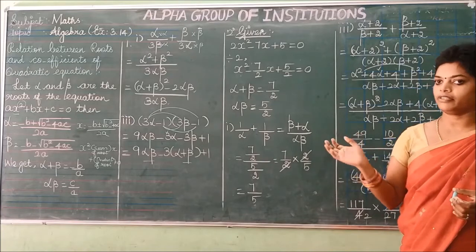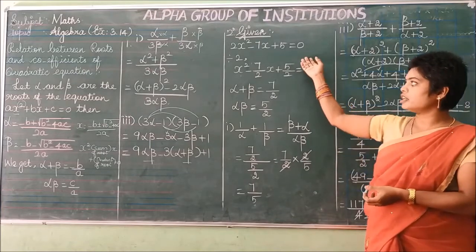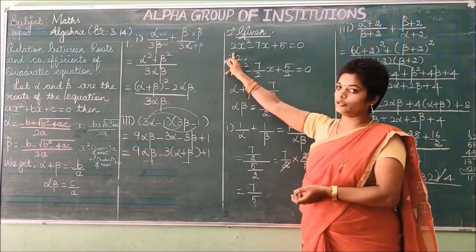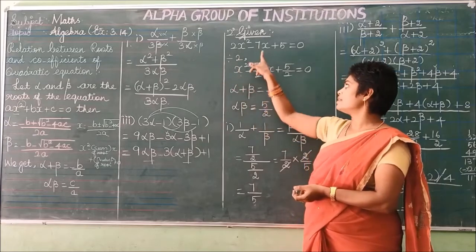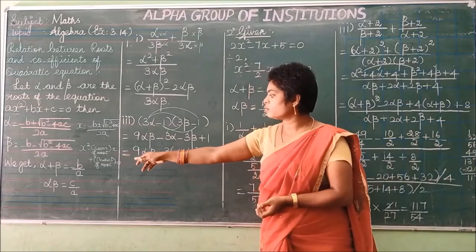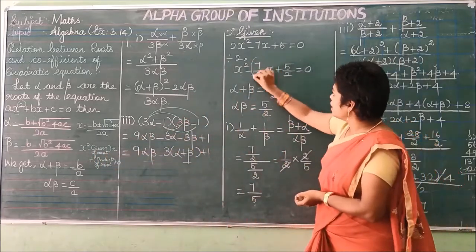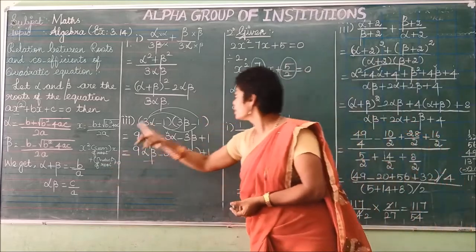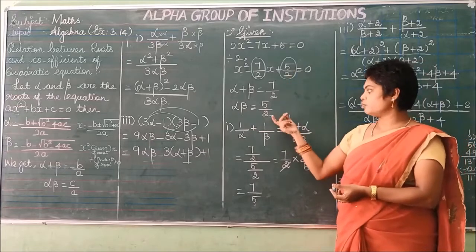Without solving, divide throughout the equation by 2 to make the x² coefficient equal to 1. Dividing by 2 gives: x² − (7/2)x + 5/2 = 0. From this, alpha plus beta equals 7/2, and the product alpha times beta equals 5/2.